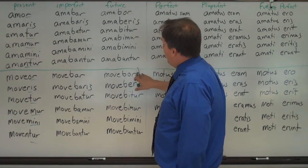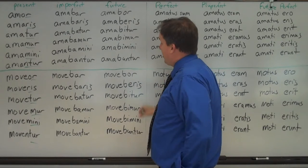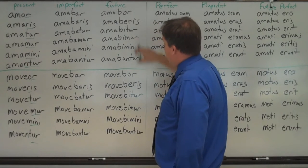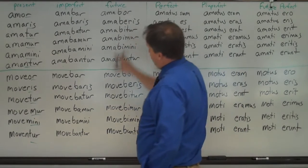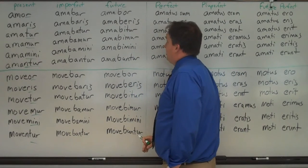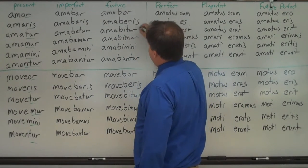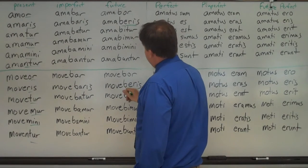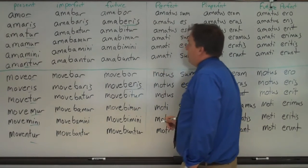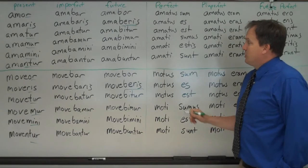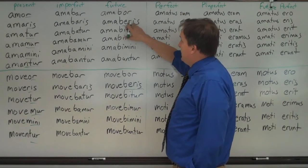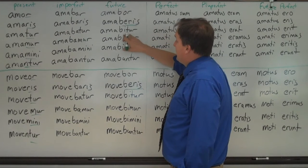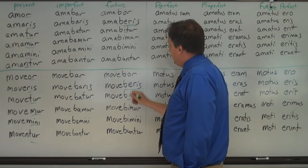Amabor and moebor would be the future. So you have the bovis bit going on again, but with the endings ar, ris, tor, mor, mini, entor. You have the A and the E combined, joining them to the stem. But the big difference here is this: The Romans don't like to go veris, they go verus. So instead of using that I here where we would expect from knowing how the active goes, they use an E.